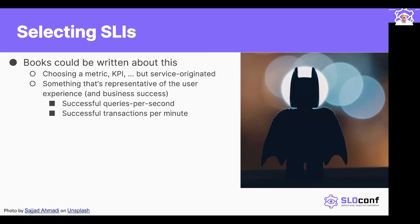The central question for this is the act of selecting the right SLIs. Books could be written about this — books have been written about this, and there will be more written about it. In essence, you are trying to choose some kind of metrics, some kind of key performance indicator within the service or some aggregate of service behavior — something that is representative of the user experience and business success. Canonical examples here are successful queries per second or successful transactions per minute, but a lot, if not everything, depends on the actual functional purpose of the system in question. You can think of things like user registration journeys and amount of source code pulled down and applied as being crucial to this.